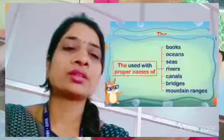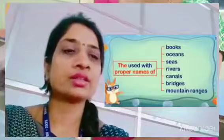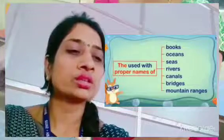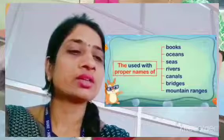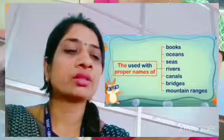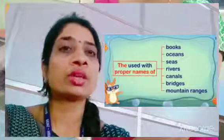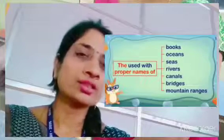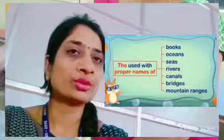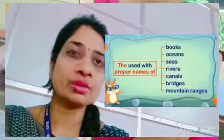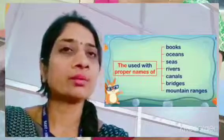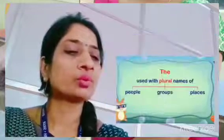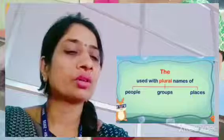'The' is used with proper names of books, oceans, seas, rivers, canals, bridges, and mountain ranges. We use 'the' with all of these. Also, we use 'the' with the names of sacred books. 'The' is also used with plural names of people, groups, and places.